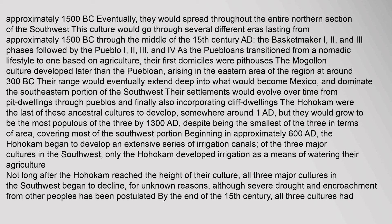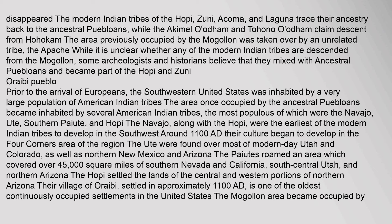Not long after the Hohokam reached the height of their culture, all three major cultures in the southwest began to decline for unknown reasons, although severe drought and encroachment from other peoples has been postulated. By the end of the 15th century, all three cultures had disappeared. The modern Indian tribes of the Hopi, Zuni, Acoma, and Laguna trace their ancestry back to the ancestral Puebloans, while the Akamal Oedam and Tohono Oedam claim descent from Hohokam. The area previously occupied by the Mogollon was taken over by an unrelated tribe, the Apache. While it is unclear whether any of the modern Indian tribes are descended from the Mogollon, some archaeologists and historians believe that they mixed with ancestral Puebloans and became part of the Hopi and Zuni-Orebi Pueblo.